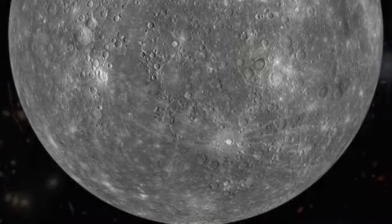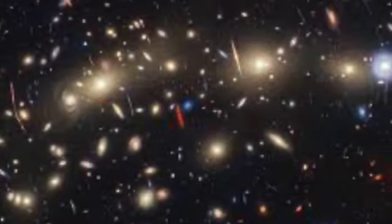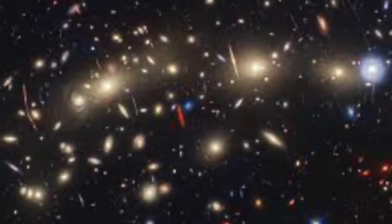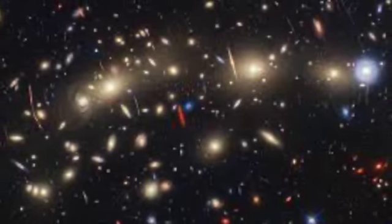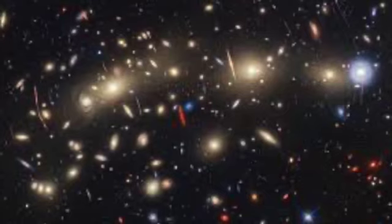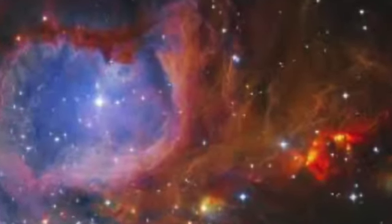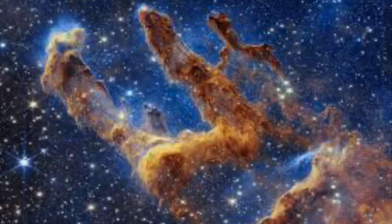By four billion years ago, the planets and moons had been formed. But the solar system still looked very different from its current state. There were probably many more planets than the eight we know today, and they would have been much closer together.